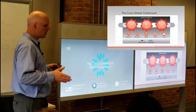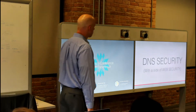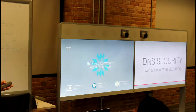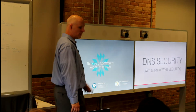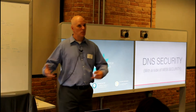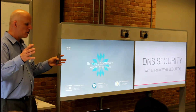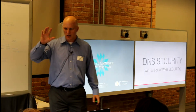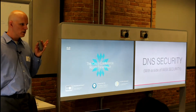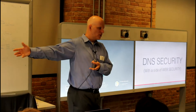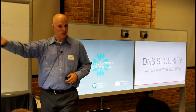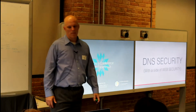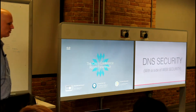Let's start with DNS security, with a side of web security. Web security is typically accomplished through a proxy — a machine that surfs the web on behalf of the original requester. Think of a CEO and an administrative assistant: the CEO says go to the web and put together a report on where our stocks are today. The assistant goes out, gets that information, and gives it to the CEO. The assistant was the proxy for the CEO.